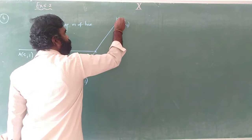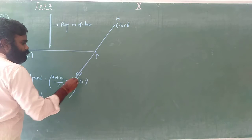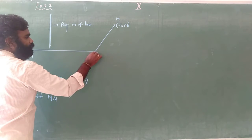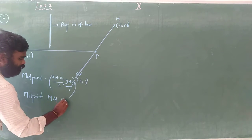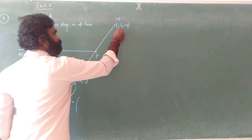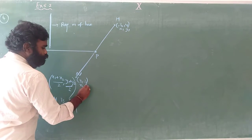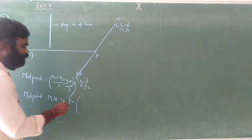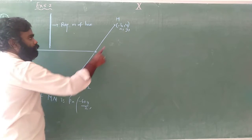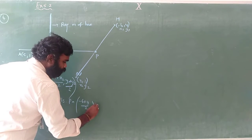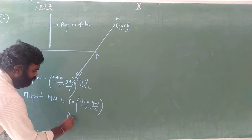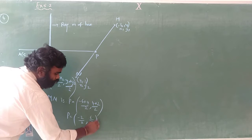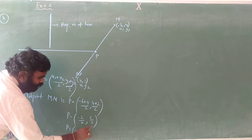Let me label the points: M is one point and N is the other. The midpoint of MN is P. So P = ((-6 + 4)/2, (4 + 2)/2) = (-2/2, 6/2). Therefore, P is (-1, 3).